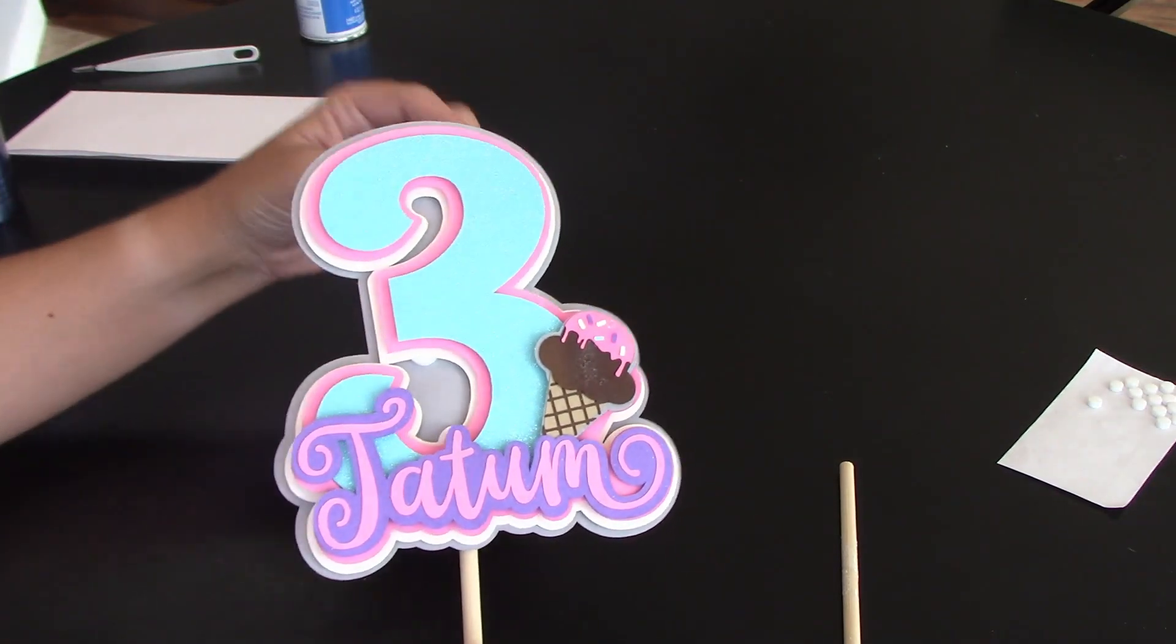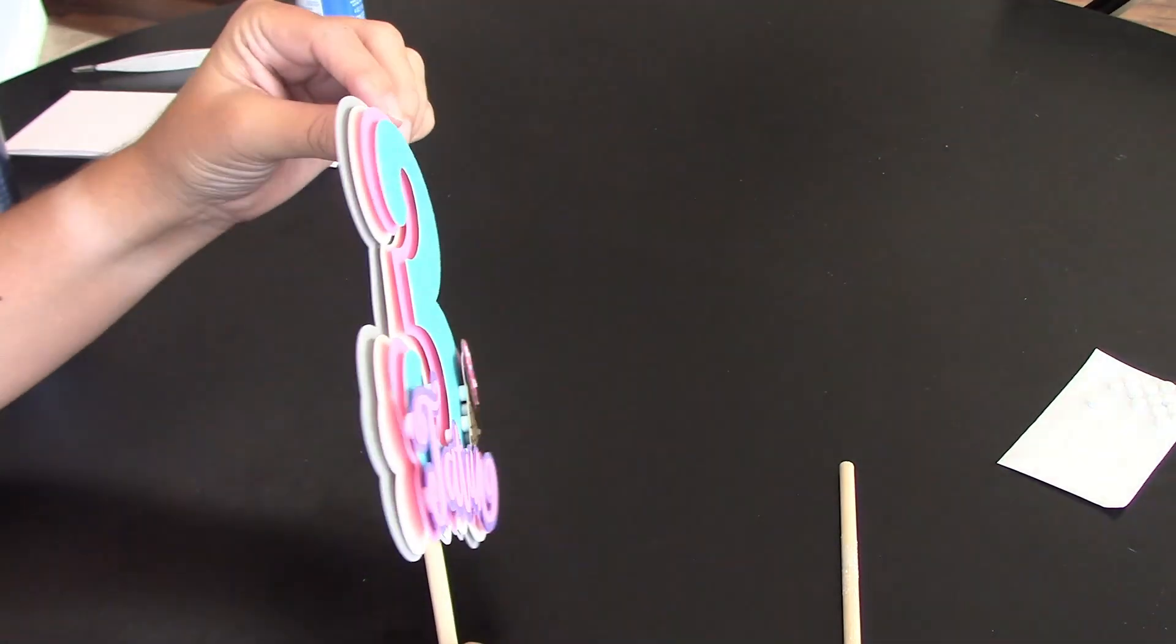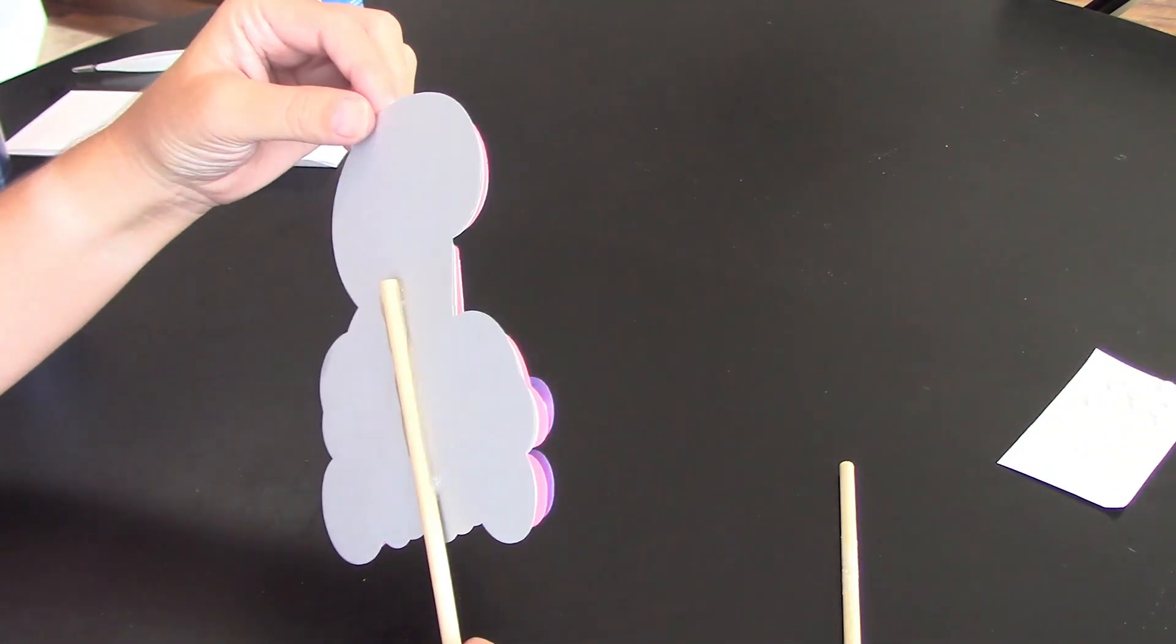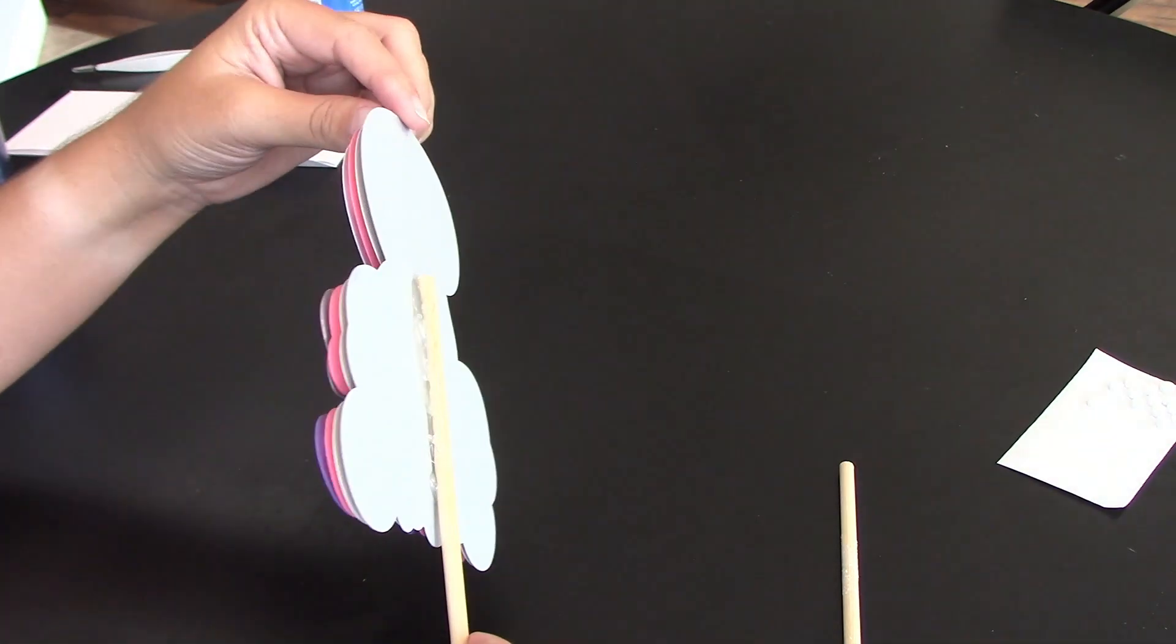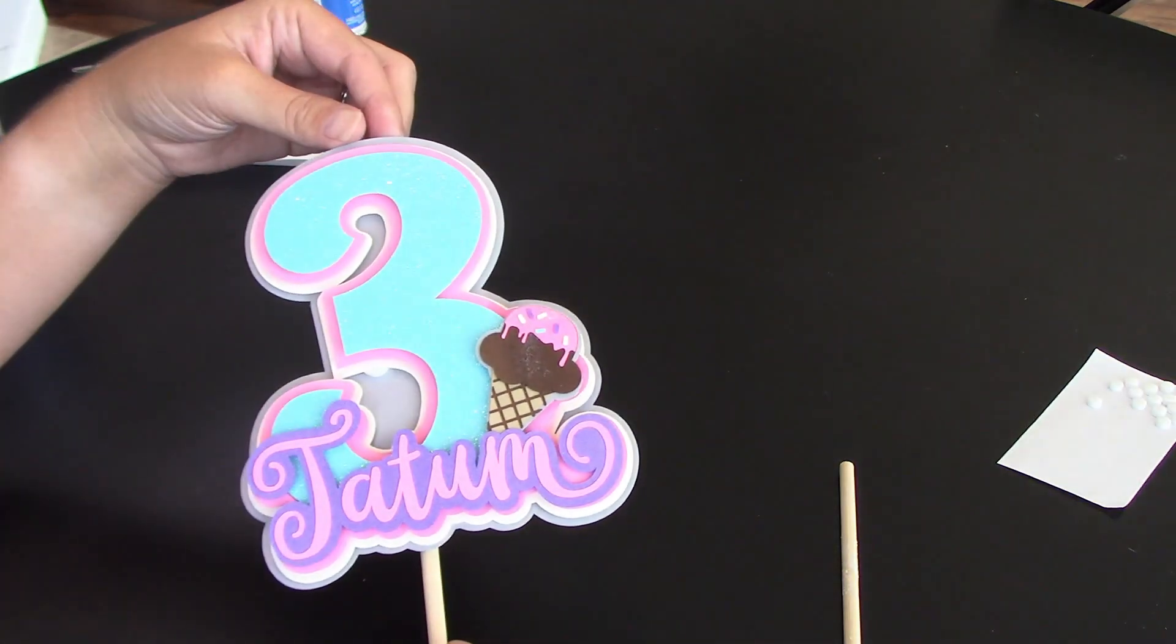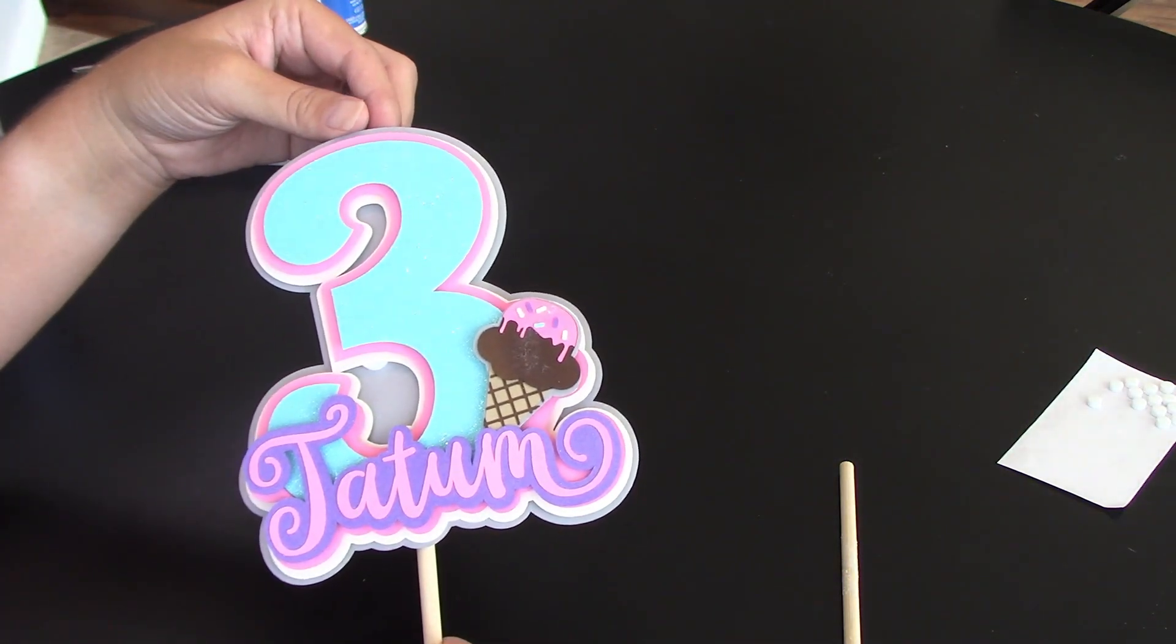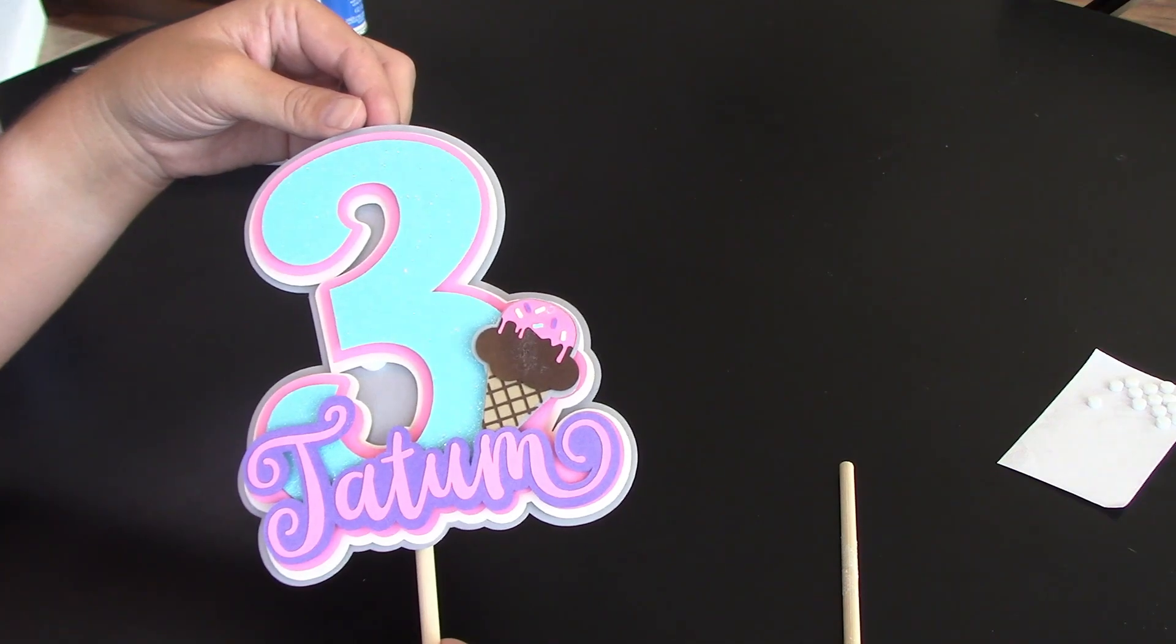So here it is all complete. It's our 3D layers that we have. It's stuck to its glue stick on the back so we can put it in the cake. And that's it. If you have any questions guys, just let me know. We'll see you next time. Thanks.